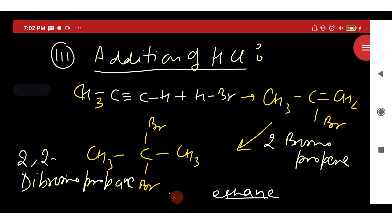Same reaction when carried out in the presence of propyne, then in the first step 2-bromopropene is formed, and on further addition of HBr, 2,2-dibromopropane is formed.